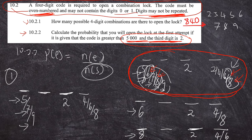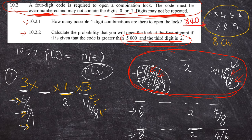For Case 1 (first digit is five, seven, or nine): three choices in the first position, three choices in the last position (four, six, or eight), one choice in the third position (must be two). From eight total digits, three positions are occupied, leaving five choices for the remaining middle position. So Case 1 gives 3 × 5 × 1 × 3 = 45 codes.